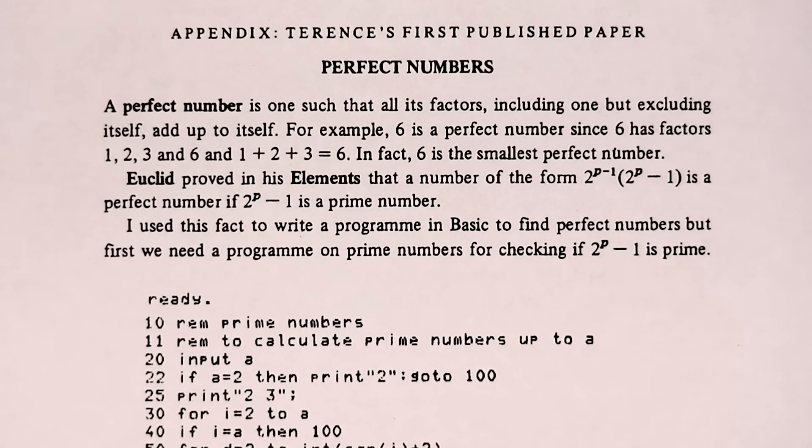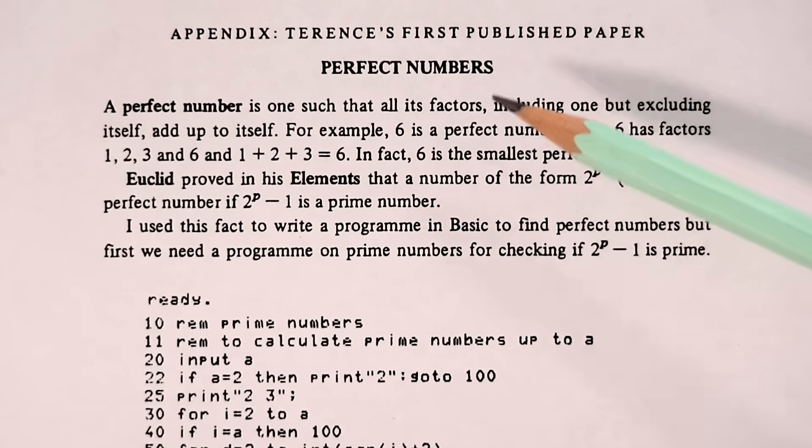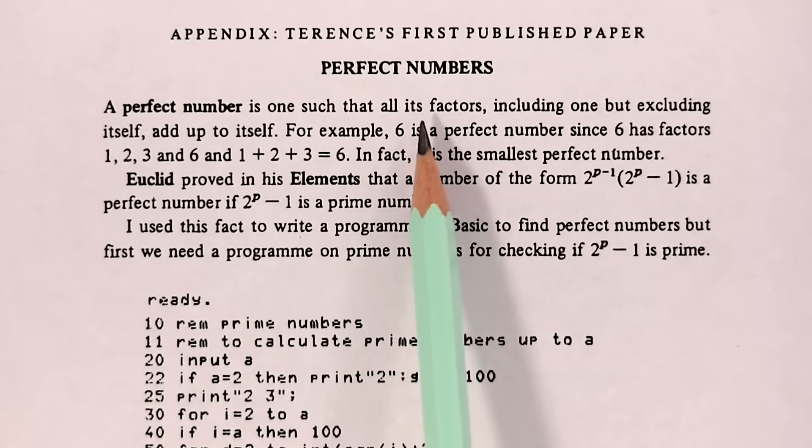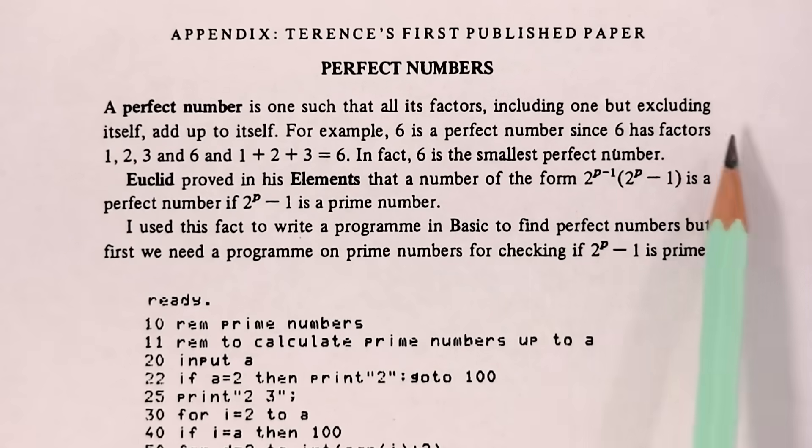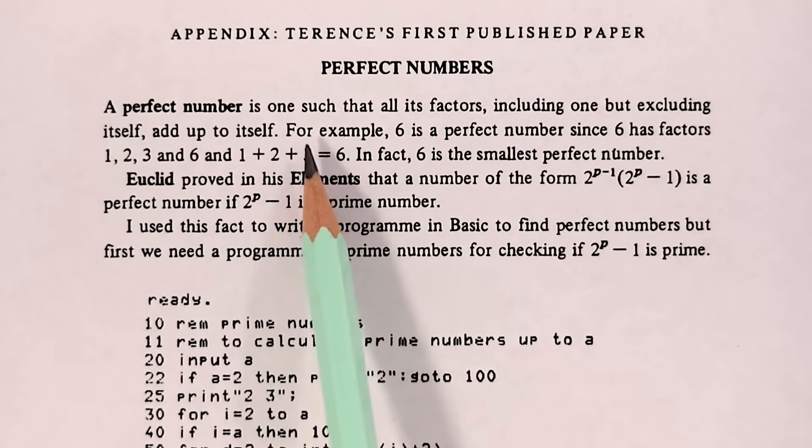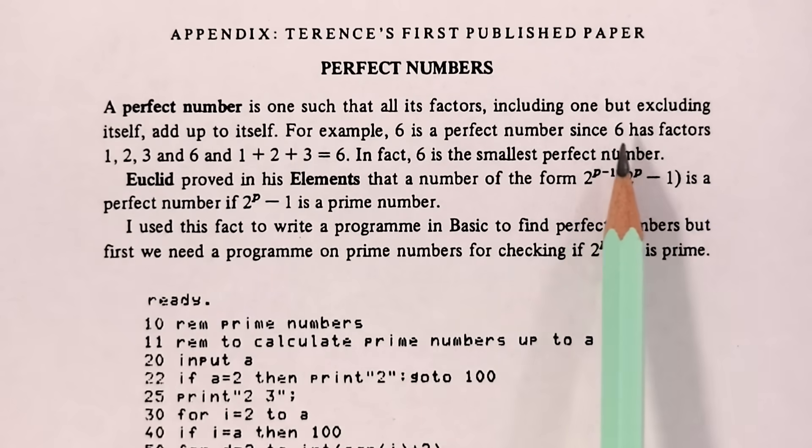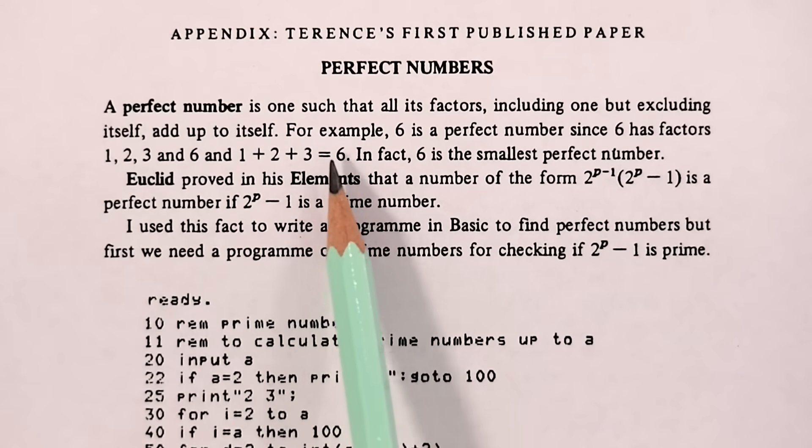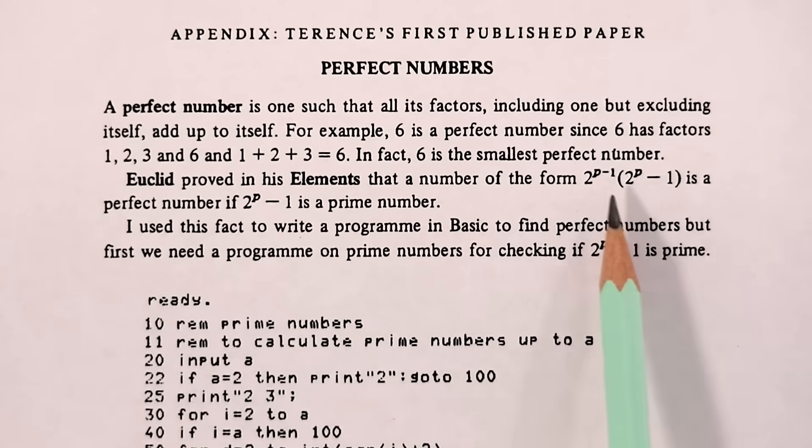Let's finish with a look at a program that now eight-year-old Terence Tau had submitted for publication to a student mathematics journal called Trigon. It is all about perfect numbers and is labelled here as Terence's first published paper. A perfect number is one such that all its factors, including one, but excluding itself, add up to itself. For example, six is a perfect number because six has factors one, two, three, and six, and one plus two plus three is equal to six. Euclid proved that a number of this form is a perfect number if two to the p minus one is a prime number.